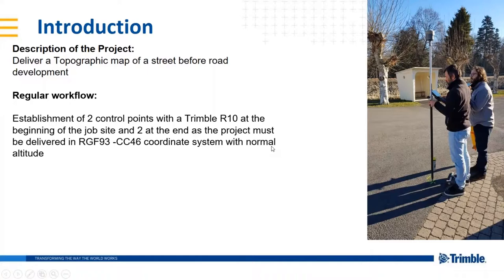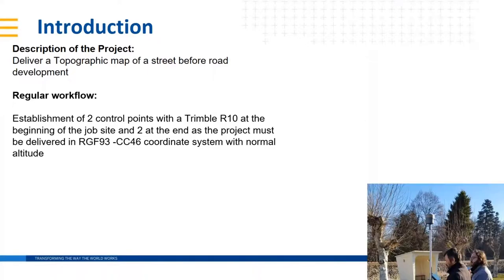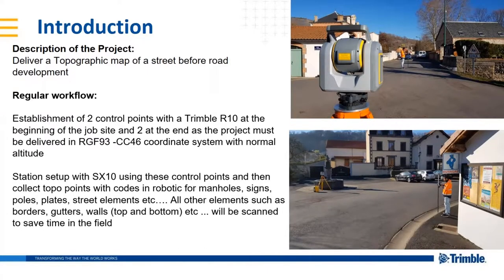First, they established control points with the Trimble R10 at the beginning and end of the job site. The road was about 1.5 kilometers, and the job had to be delivered in the French coordinate system RGF93. They used those control points to set up the SX10, then used it like a total station — collecting points for poles, manholes, signs, and road centerline. Every time, Yannick also did a horizontal band scan to collect a point cloud to use in TBC to extract information and feature coding.